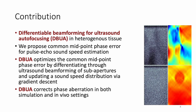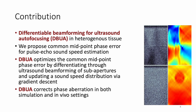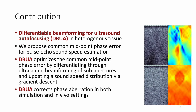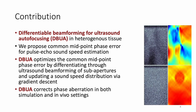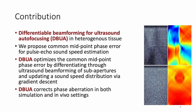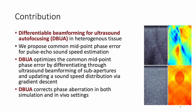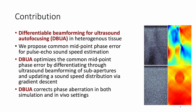DBUA corrects phase aberration in both simulated and in-vivo settings, while simultaneously providing a quantitative sound speed map, which could be informative for diagnostics — for example, in non-alcoholic fatty liver disease and breast lesion classification.